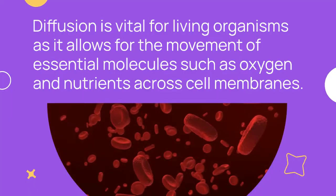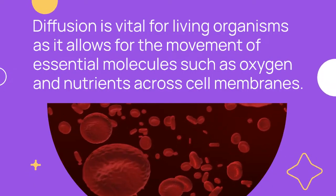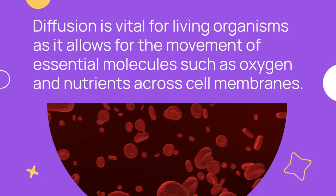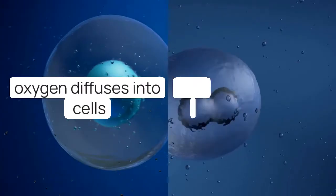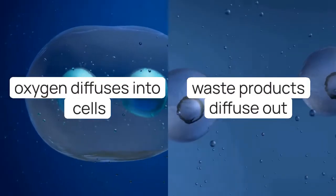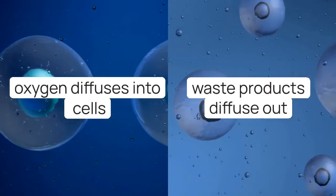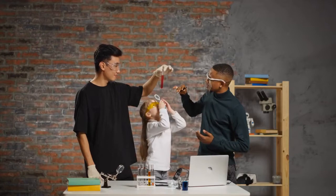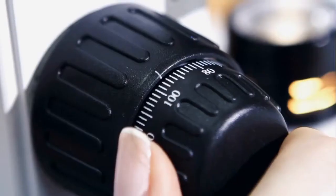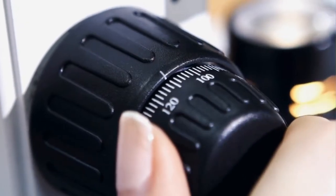Diffusion is vital for living organisms as it allows for the movement of essential molecules such as oxygen and nutrients across cell membranes. This process is crucial for cellular respiration, where oxygen diffuses into cells and waste products diffuse out. Additionally, it enables the exchange of substances in the bloodstream, ensuring the body's cells receive the necessary resources for survival.